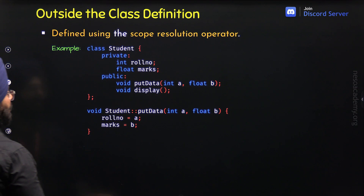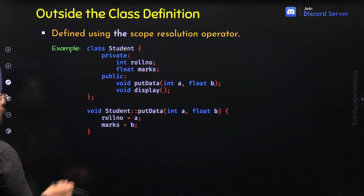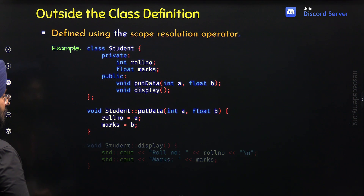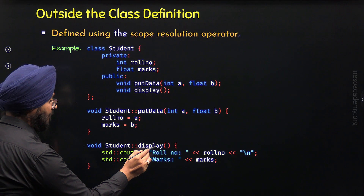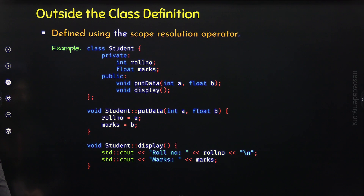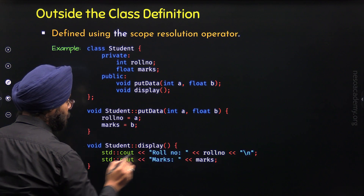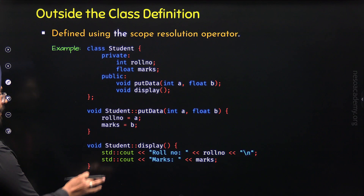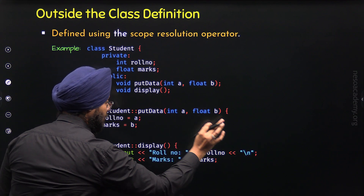Now let's define the display function as well in the same way using the scope resolution operator. I have defined the display function with the help of the scope resolution operator, and within braces, I have provided two std::cout statements to display role number and marks on the screen.